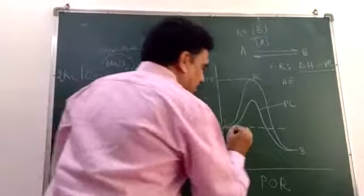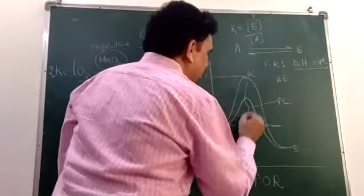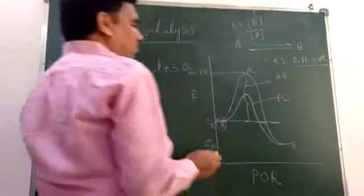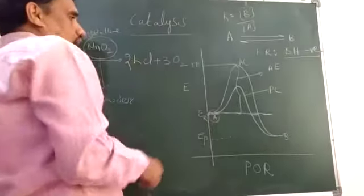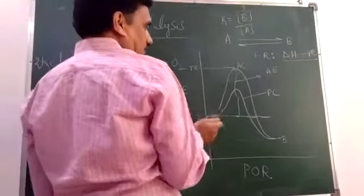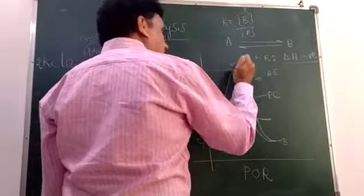The additional energy requirement is called activation energy. When substance A acquires this activation energy, it reaches the threshold level and forms the product.